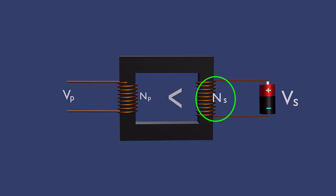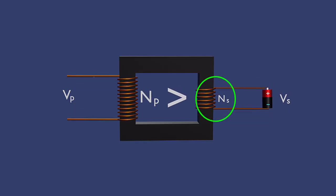Conversely, if the number of turns in the secondary coil are less than the primary, the induced voltage will be lower, resulting in a step-down in voltage. Such a transformer is called a step-down transformer.